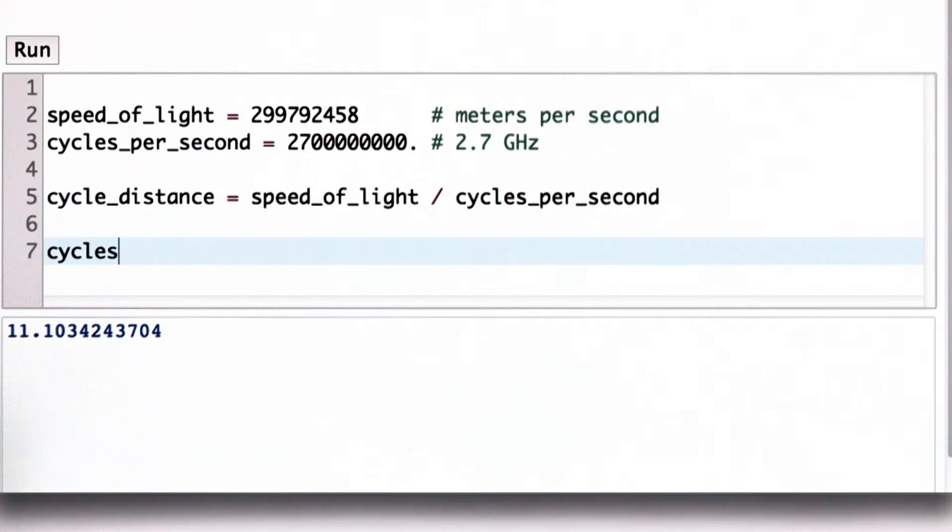So let's see that in the interpreter. We could change the value of cycles_per_second. Suppose we have a faster processor. Now we've upgraded, we've got a 2.8 gigahertz processor.